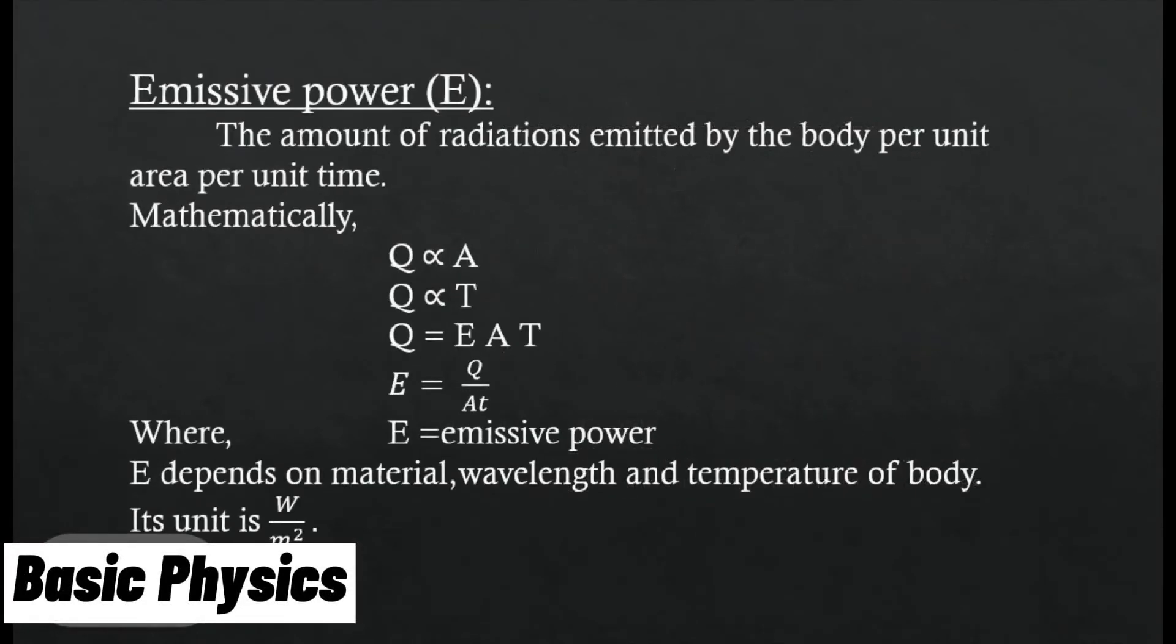Emissive power. The amount of radiations emitted by the body per unit area per unit time. Mathematically, Q is proportional to area A. Q is proportional to temperature T. Combining above equations, Q equals E A T.